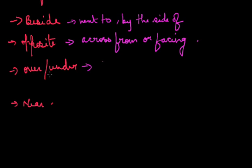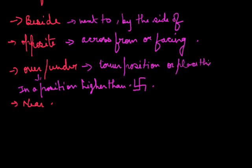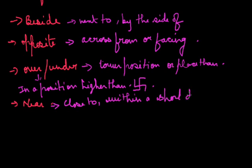The preposition 'over' indicates in a position higher than something. For example, 'There is a sign of a fire exit over the door.' The preposition 'under' indicates in or to a lower position or place than something. For example, 'The boat is under the bridge.' The preposition 'near' indicates close to, within a short distance or time of something. For example, 'We often find shells near beaches.'